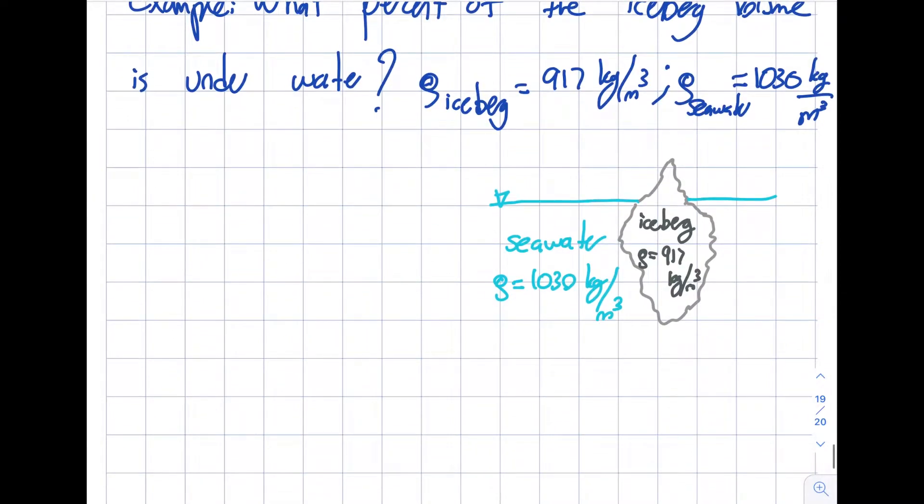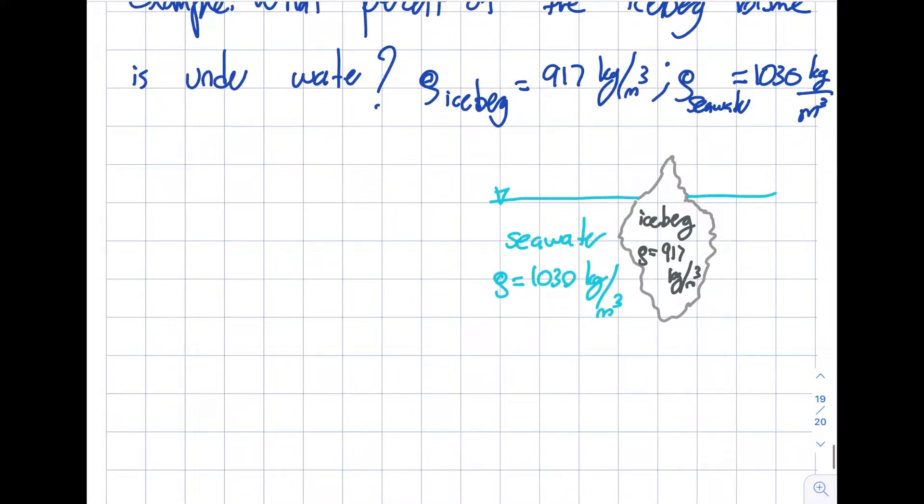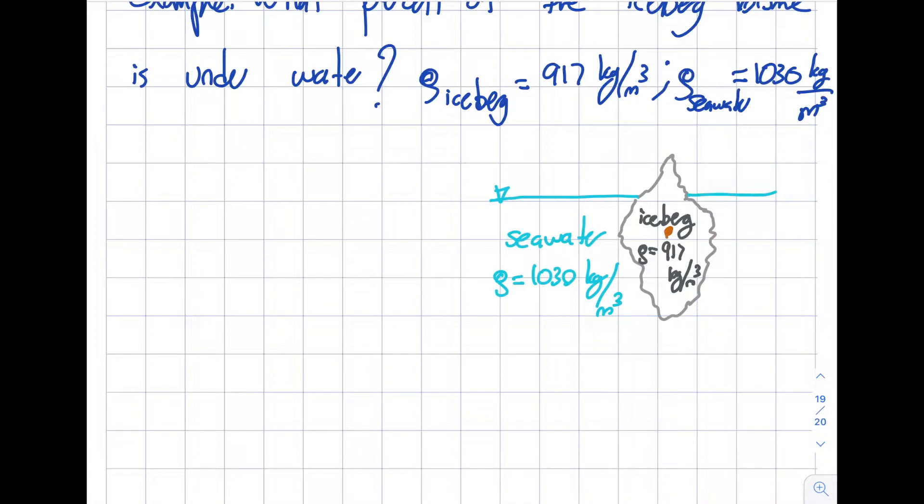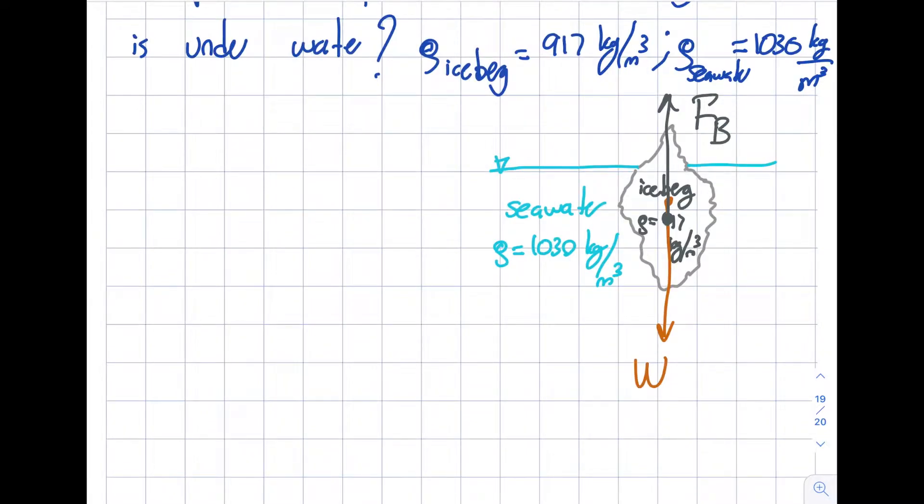As I mentioned, this is a fairly straightforward process. There'll be the weight of the iceberg, and somewhere down here will be the buoyant force. In fluid statics, they need to equal each other. So F_B equals W.